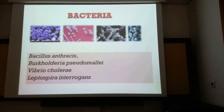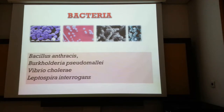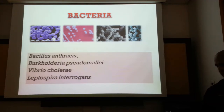Among the bacteria, we have various types. For instance, Bacillus anthracis is widely known — it is a soil bacterium and the production of spores and their dispersal through aerosols is a potential hazard. We also have Burkholderia species found in soils, Vibrio, and Leptospira — some of the common bacteria associated with biological hazards.